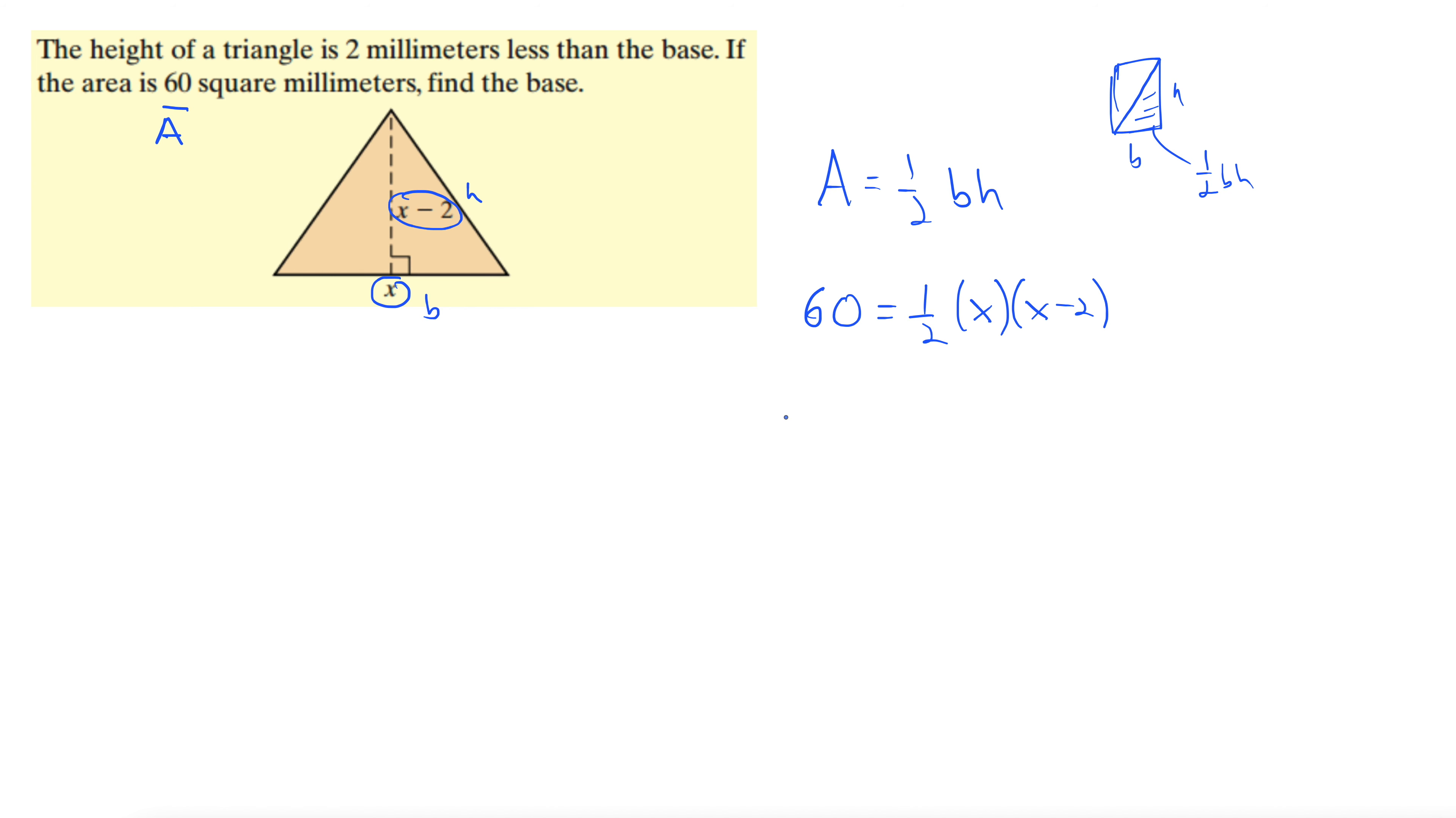Okay, now what I would do here is clear fractions. Because we have an equal sign and a fraction, we can get rid of the fractions by clearing fractions. By that I mean multiply both sides by 2. All right, get rid of that fraction. So that gives us 120 equals x times x minus 2, and now we're on a roll.